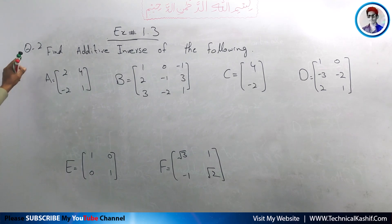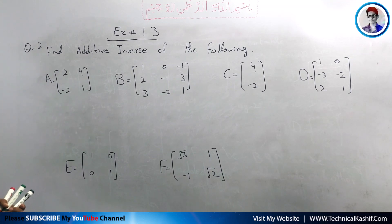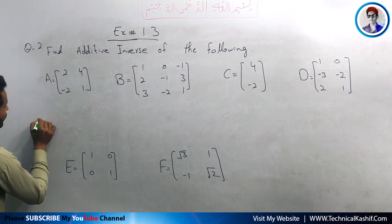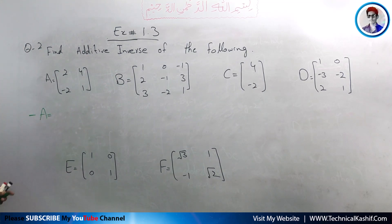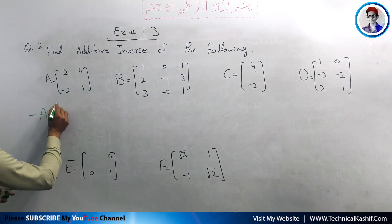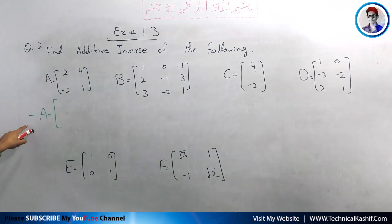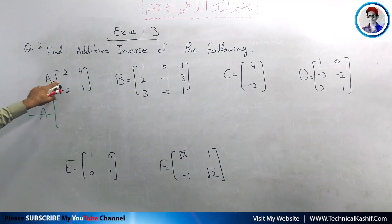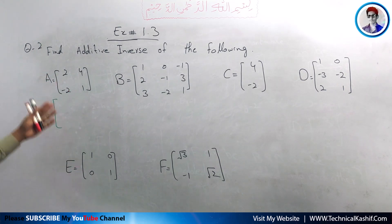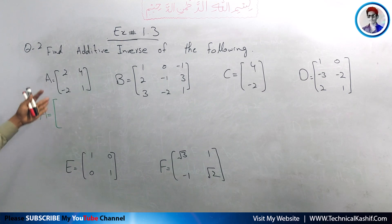Last time we read about additive inverse and found the additive inverse of some matrices. Today we apply the same condition. To find the additive inverse of a matrix, the negative of the matrix is its additive inverse. We can find it by multiplying matrix A by minus 1, or by changing the sign of all the elements of matrix A.